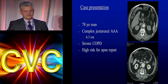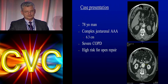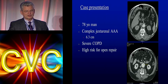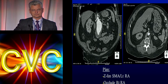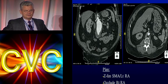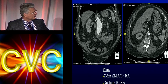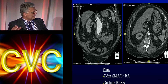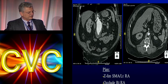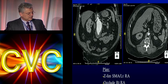He had severe COPD and coronary artery disease, and our vascular surgeons didn't want to operate on him. He even went out of state to seek help and was told to wait until his aneurysm reaches 6 to 6.5 centimeters. He was really a poor surgical risk. The issue was that his SMA and right renal arteries were within three millimeters of each other, so he was not a candidate for fenestration with two renal fenestrations and a scallop.